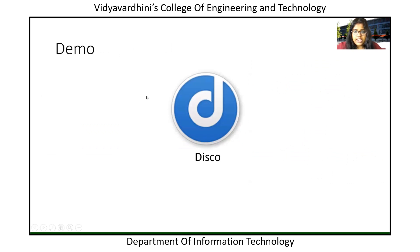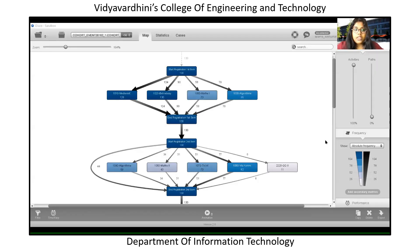Now let's have a quick demo. This is basically what Disco looks like. There are three sections: Map, Statistics, and Cases. You load your data here, which can be in CSV format, and once loaded, a process map is generated.